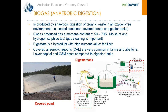The covered anaerobic lagoons, or CALs, shown on the left-hand side — a large covered anaerobic pond — are very common in farms and wood processing facilities, mostly because they have a low capital cost compared to a digester tank, which is the schematic shown on the right-hand side.